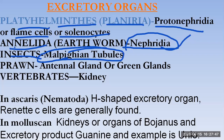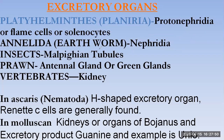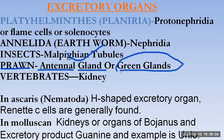In phylum Annelida, the earthworm, they have the excretory organ known as nephridia. In the case of insects, malpighian tubules — we have already studied this in the anatomy of the cockroach. And in prawns, also known as crustaceans, they have antennal glands or green glands which are involved in the excretion phenomenon.